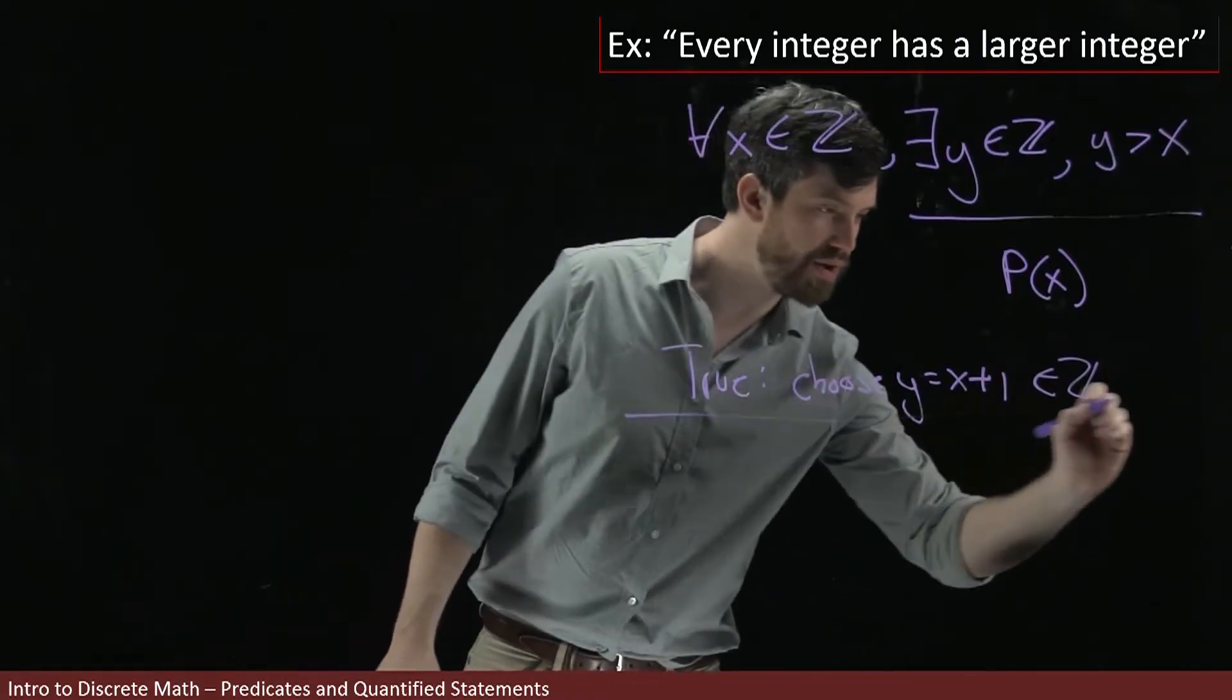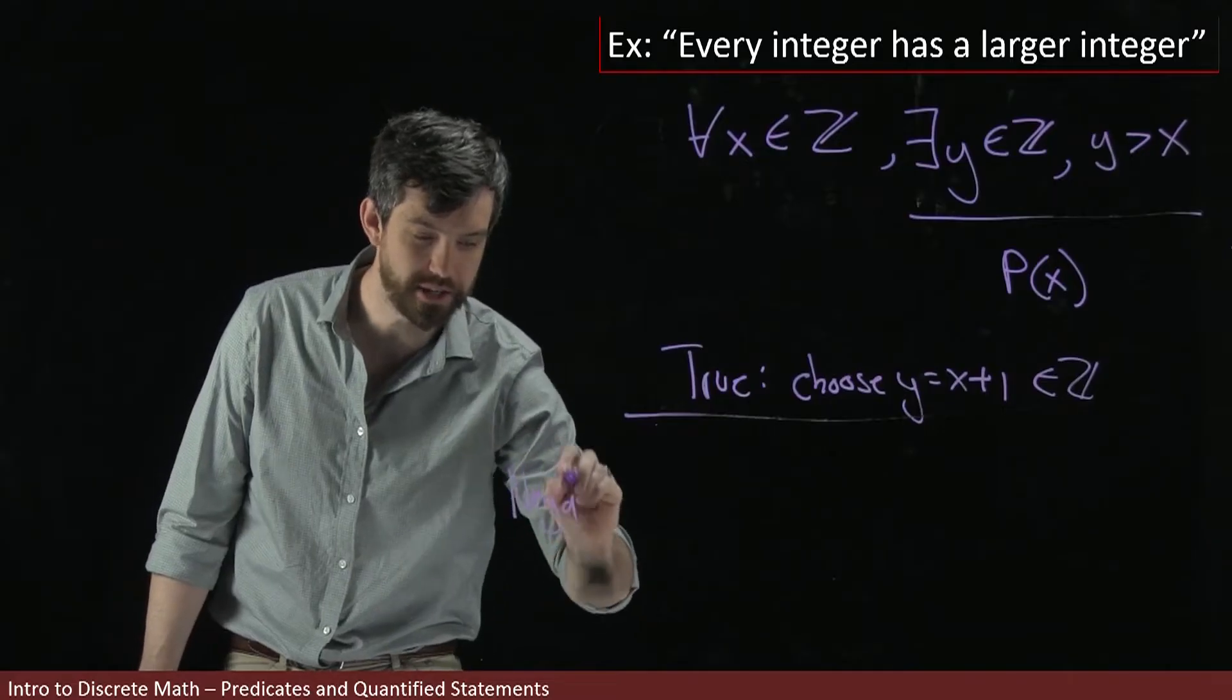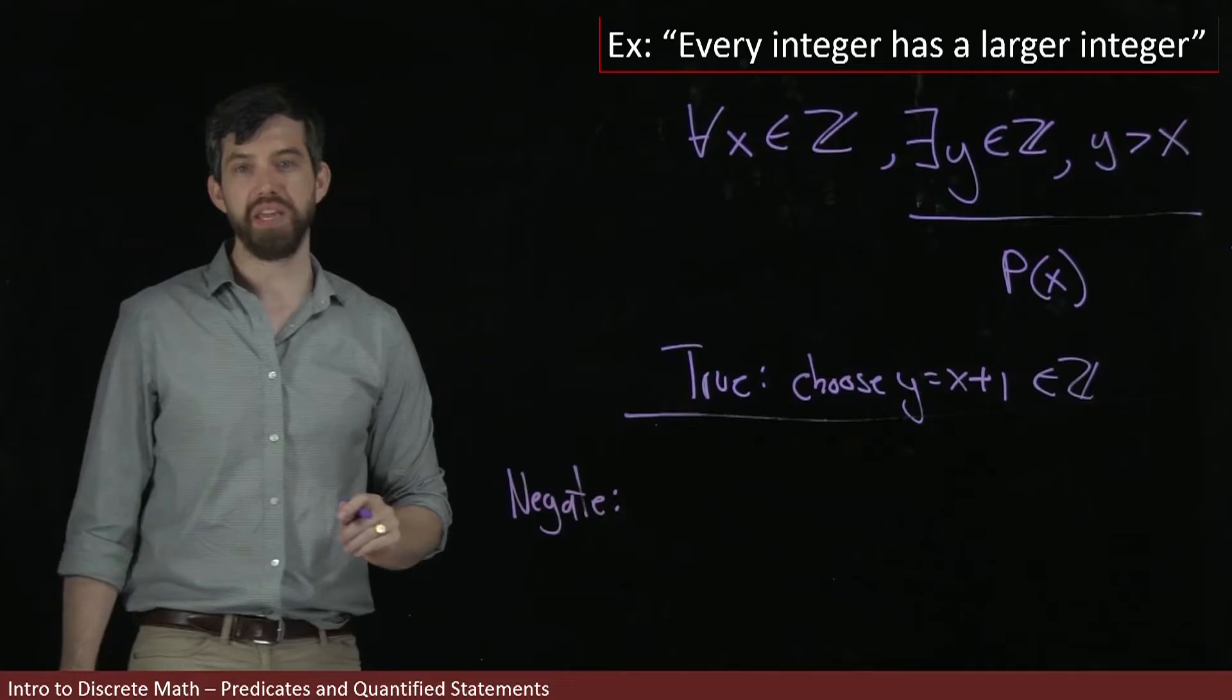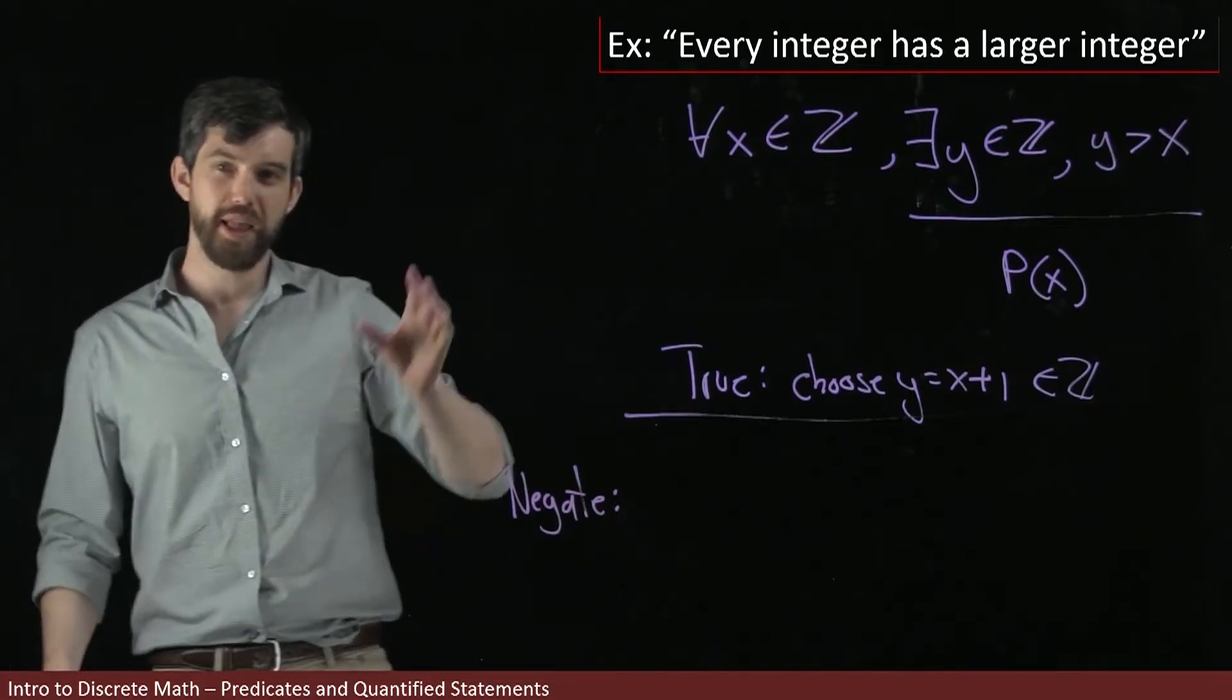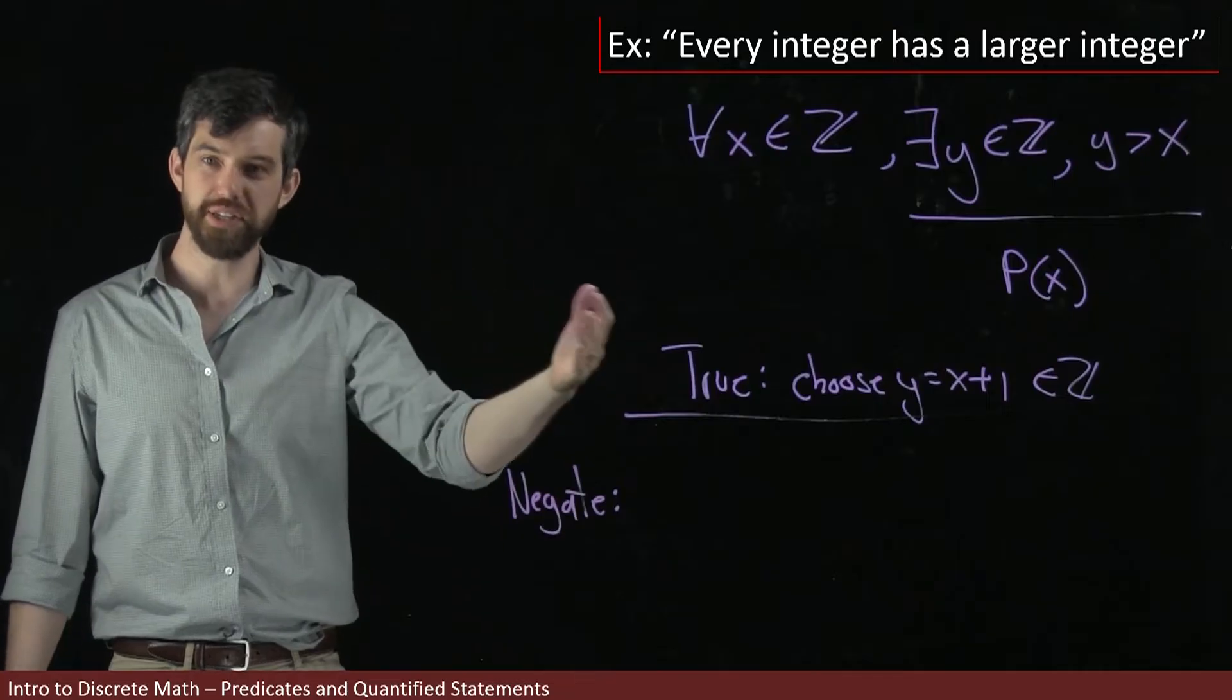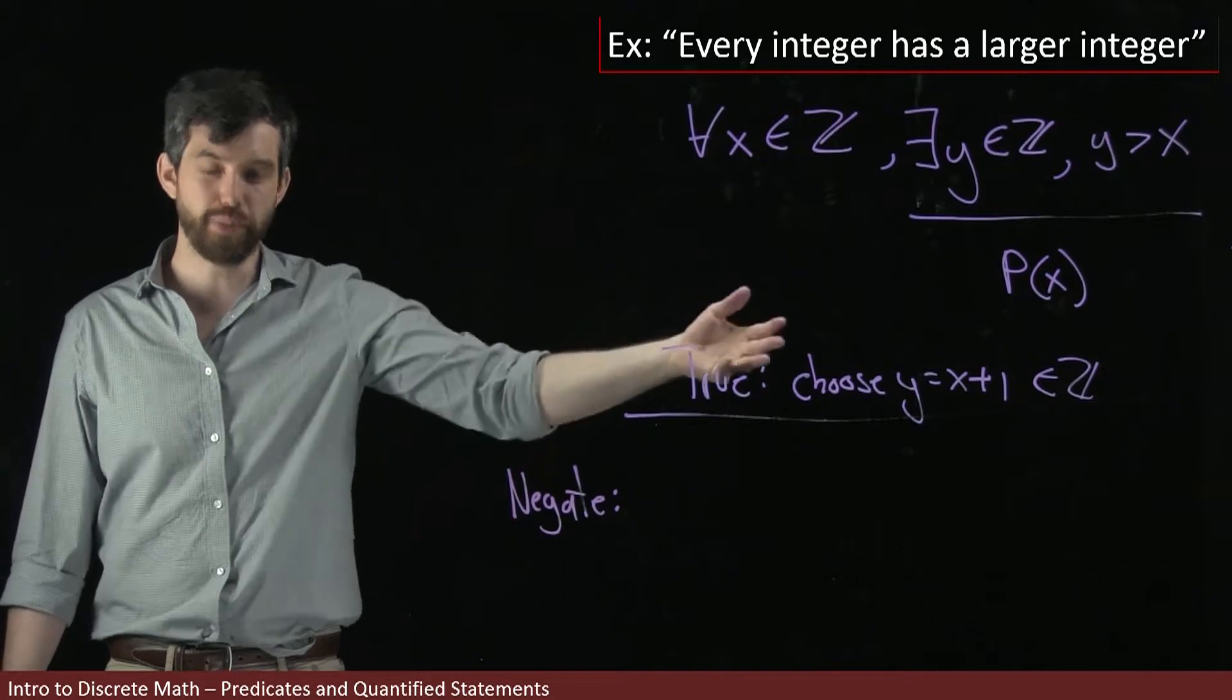All right. So now what I want to do is I've got this particular sentence and I want to try and negate it. And one of the things that we saw before was that if I negate a universal, then what I'm going to do is switch the universal to an existential and then negate the predicate.